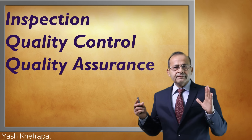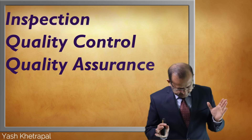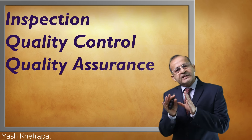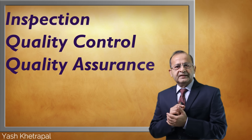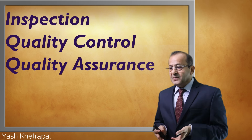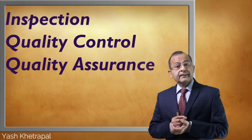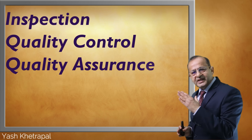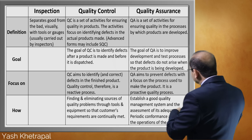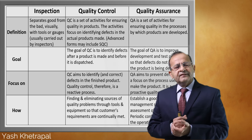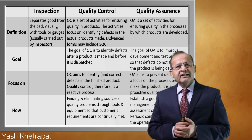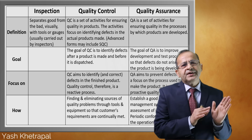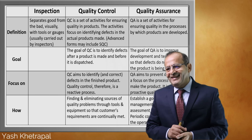What happens is that in smaller companies there's a department called inspection and quality control, loosely speaking. Bigger companies have a quality assurance department. Precisely, what is the difference between these three? Look at this table. What is inspection? Separation of good from the bad — inspection separates good from bad. It could be visual or using gauges and tools.